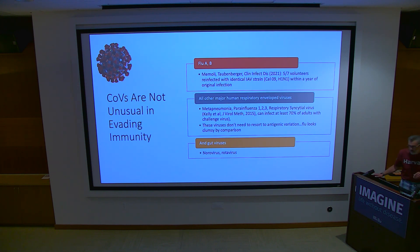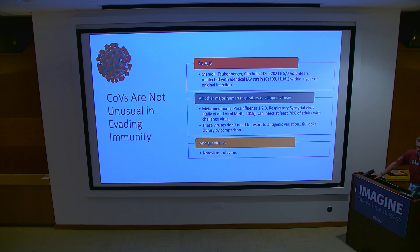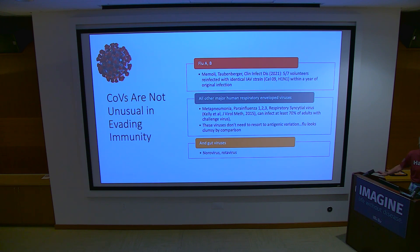This is happening with flu. Other challenge studies with respiratory viruses — including coronaviruses in the 1970s in England — show immunity doesn't last long. If the criterion is just reinfection, there's very poor protection even over a single year. The same thing with gut viruses — we're not protected from being reinfected with noroviruses or rotaviruses.